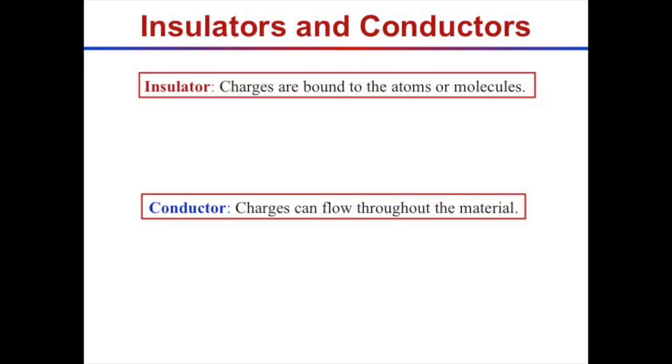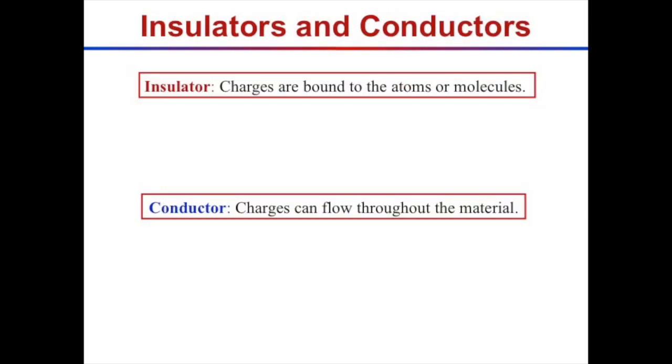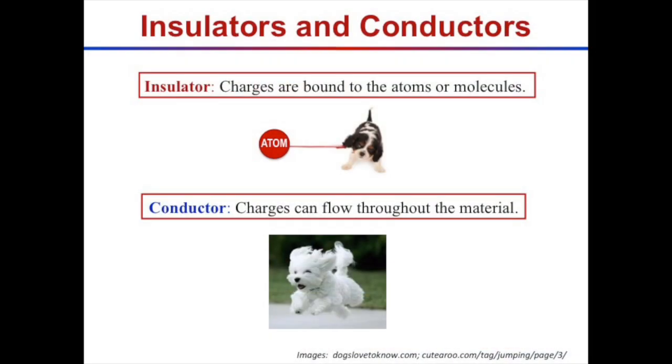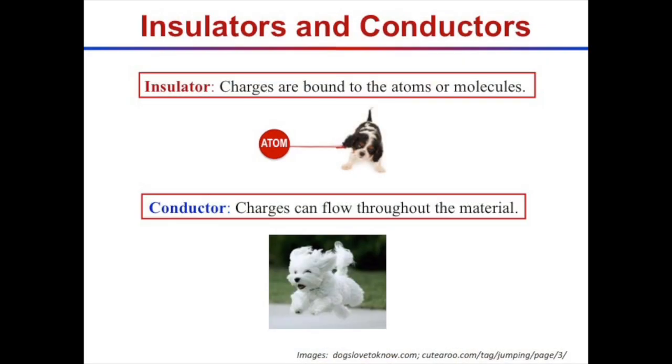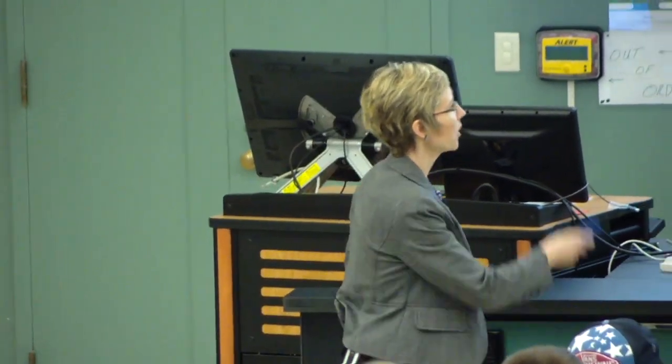In this class, we'll focus on insulators and conductors. In an insulator, charges don't move around — they're bound to their atoms or molecules. In a conductor, charges can flow throughout the material, much like a liquid. The analogy: in an insulator, electrons are like little puppies on a leash tied to each atom — they can move a little but can't break the chain and flow away. In a conductor, they're like a free-range puppy with a fence around the material but able to run anywhere inside.